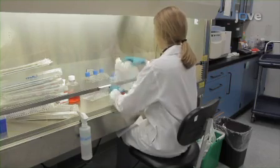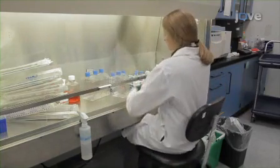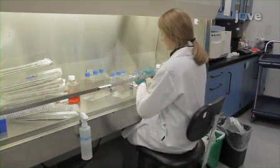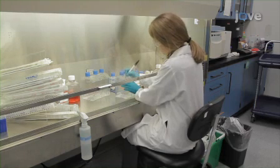To use a multi-flask for cell culture, begin by placing the vessel vertically on its side in a sterile laminar flow hood with the cap end facing up. Label the multi-flask while it is in this position before any contents have been added.